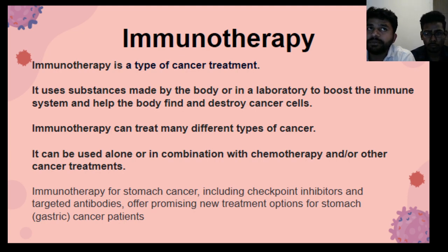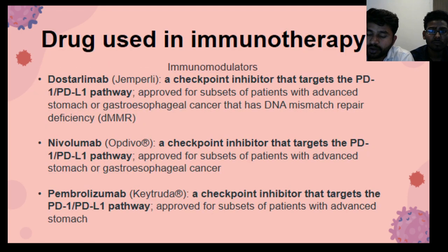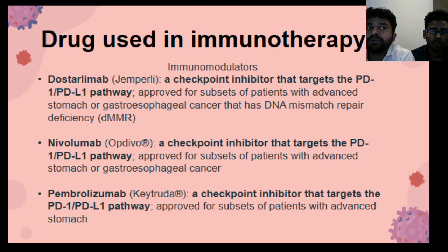Immunotherapy can treat many different types of cancers. It can be used alone or in combination with chemotherapy or other cancer treatments. The drug used in immunotherapy includes immunomodulators — a group of drugs which we use to block checkpoint inhibitors.